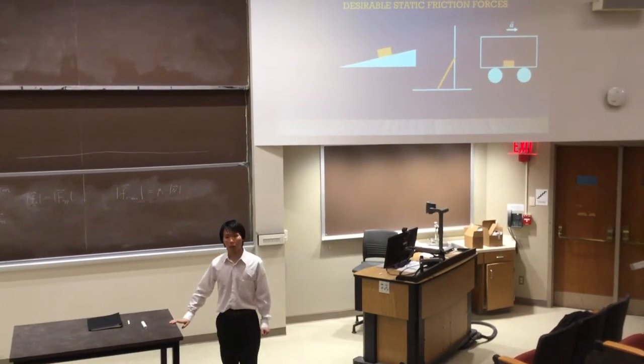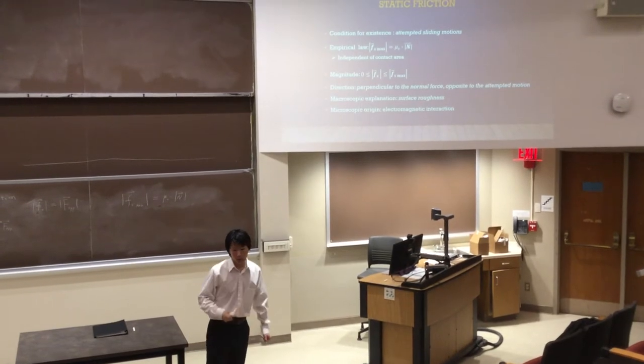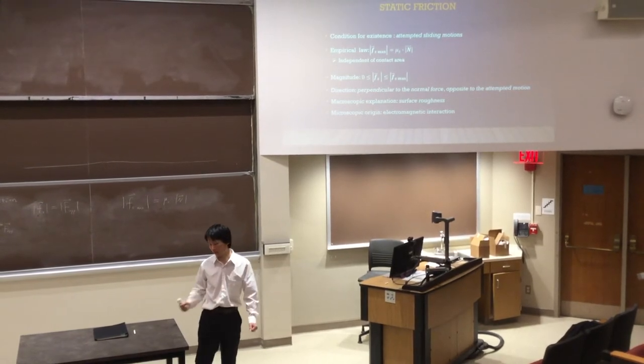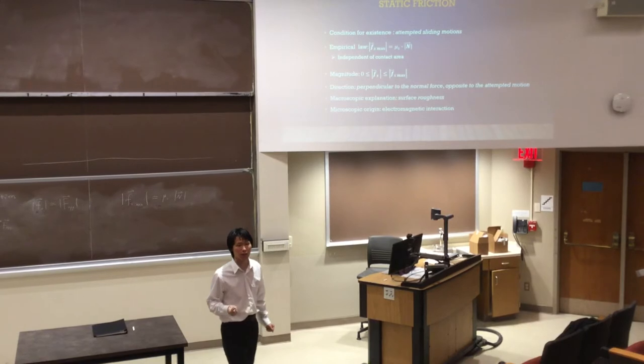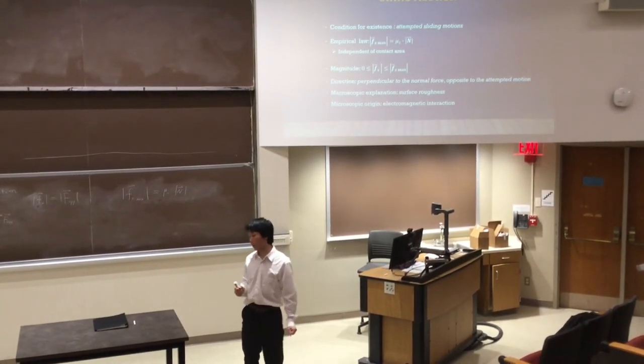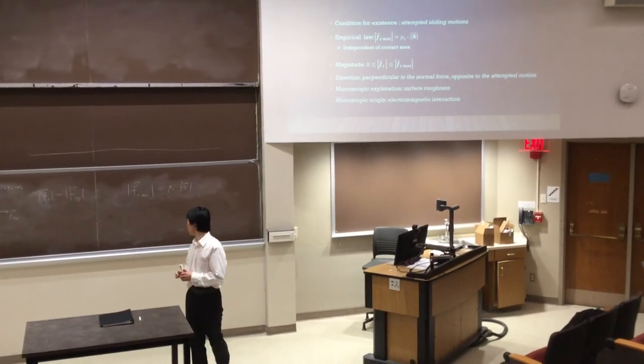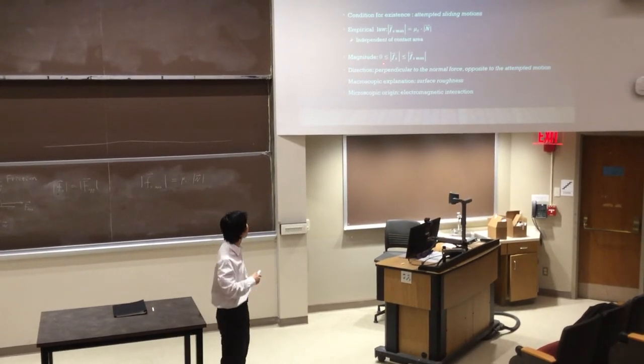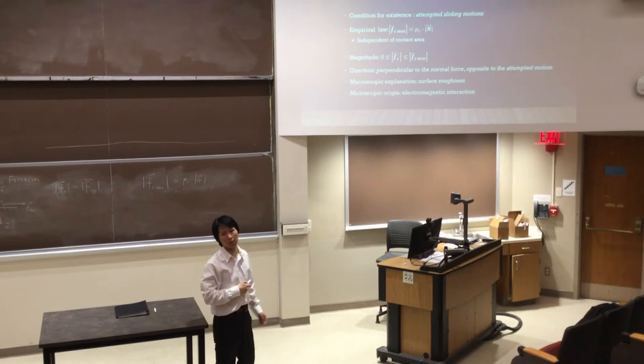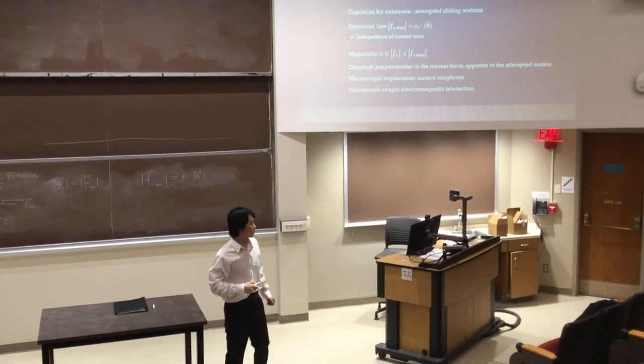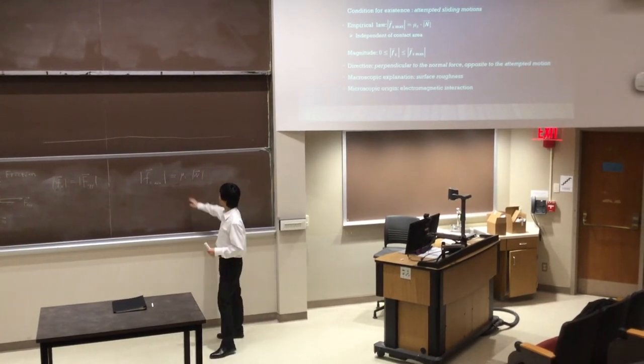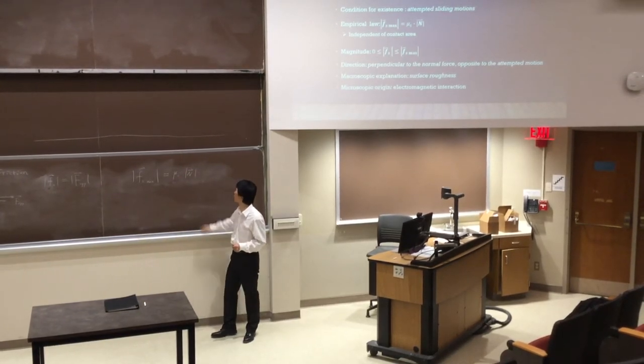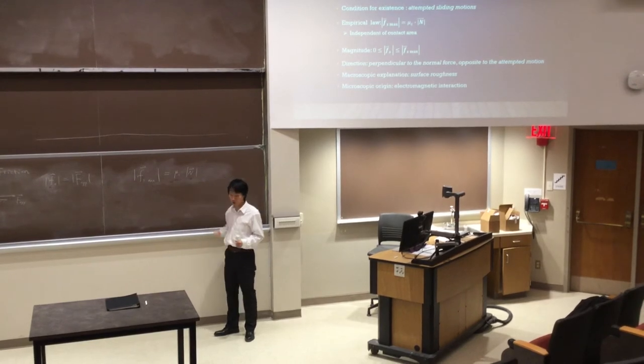Now, let's take a quick summary about static friction. Static friction appears when there is an attempted relative motion. It can adjust itself to balance the other forces, but the adjustment has a limit. The limit is the maximum static friction force. Any actual static friction force is always in between zero and the maximum static friction force. And the maximum static friction force itself only depends on the coefficient of static friction and the magnitude of the normal force.